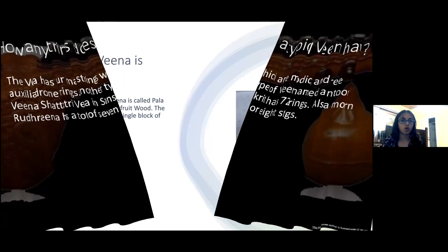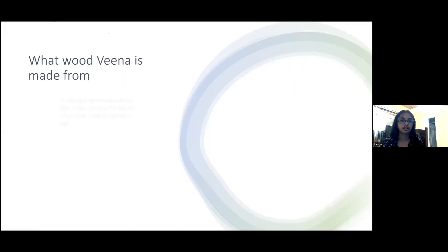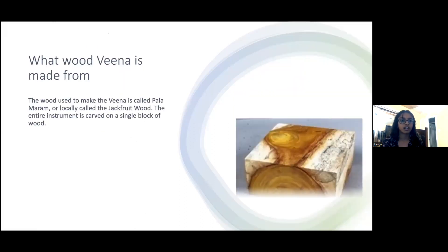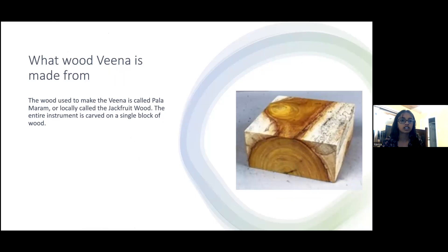What is the Veena made from? The wood used to make the Veena is called Pala Maram, or locally called jackfruit wood. The entire instrument is carved from a single block of wood or different materials.